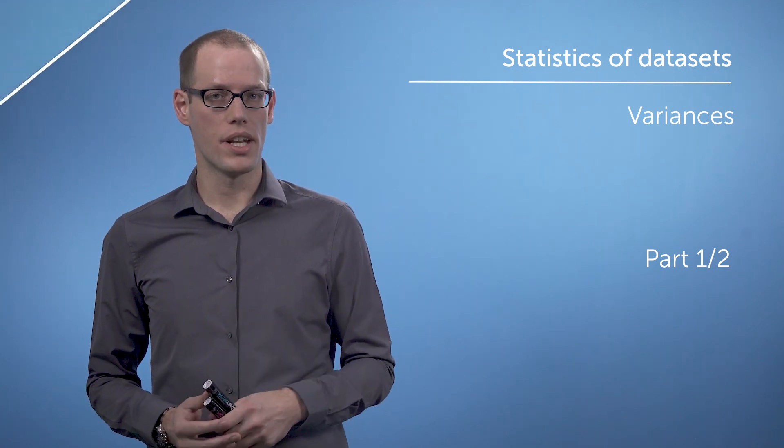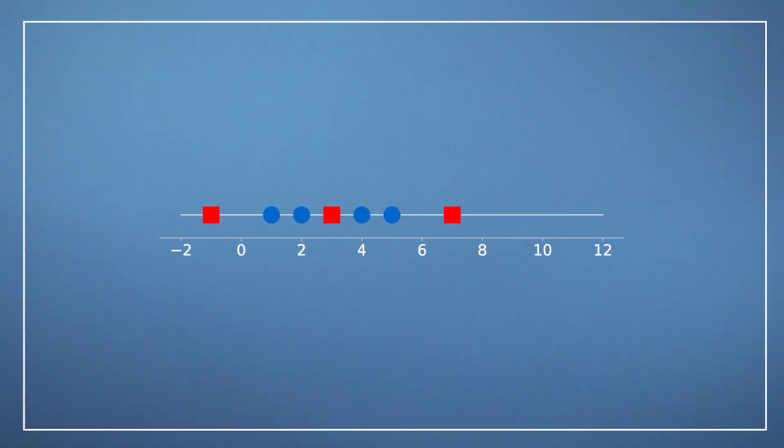Let us have a look at two different datasets, D1 and D2. D1 is represented by the blue dots located at 1, 2, 4, and 5, and D2 is represented by the red squares at minus 1, 3, and 7.